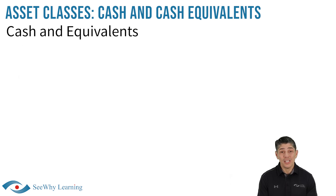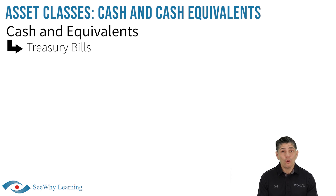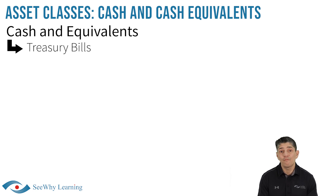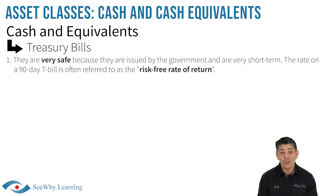Let's go over an example of an investment product from the cash and equivalent class called treasury bills. We will then explore fixed income and equity securities in future videos. Treasury bills are relatively straightforward investments that could be summarized by the following five points. They are very safe because they are issued by the government and are very short term. In fact, the rate on a 90-day T-bill is often referred to as the risk-free rate of return.